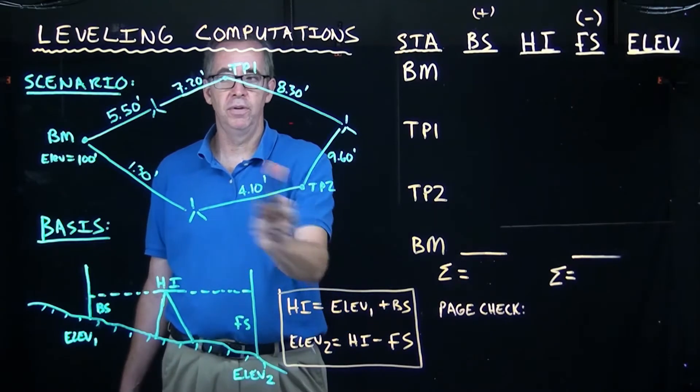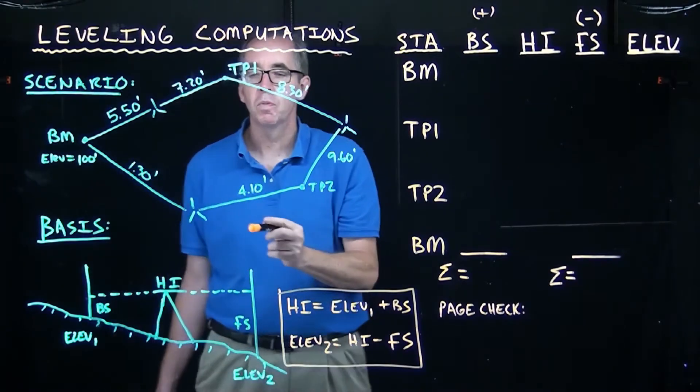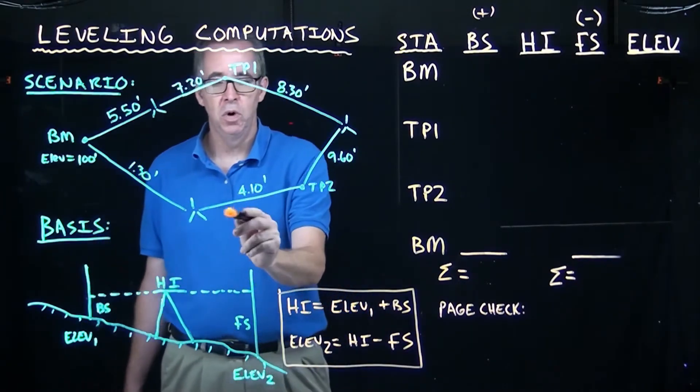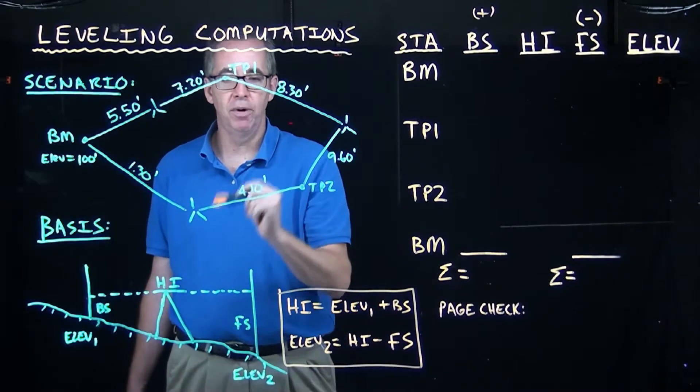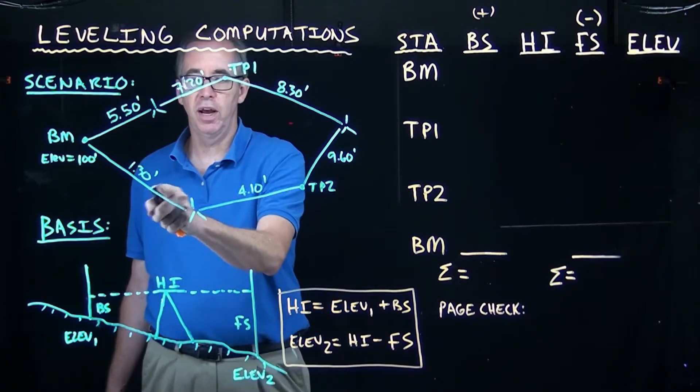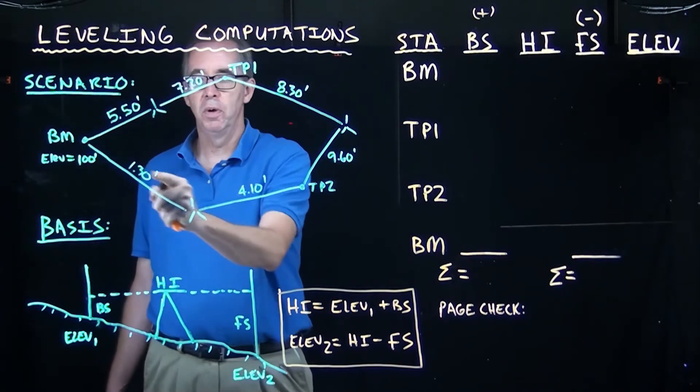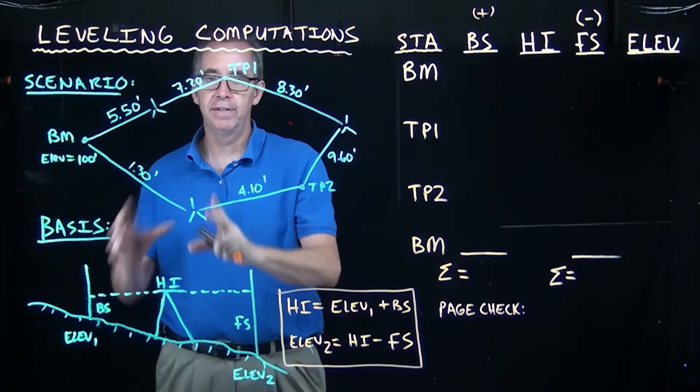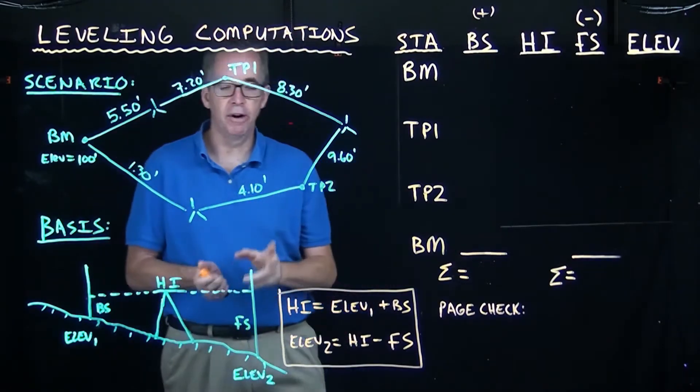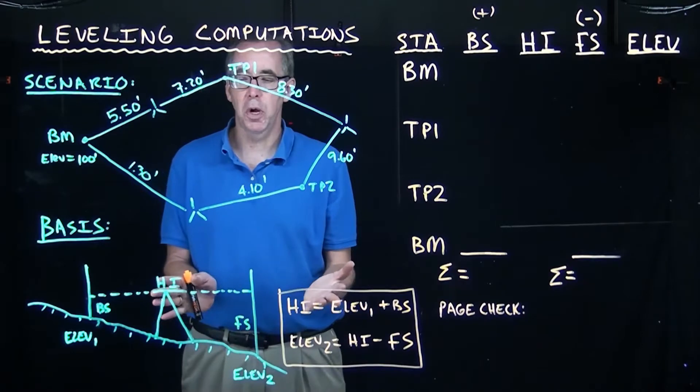The tripod moves with the level, somewhere between turning point two and the benchmark. We set up, once it's level, we do a backside, get 4.1, and we do a foresight to close this loop with the 1.3. That's the scenario that we're looking at. It's a very common scenario for a leveling exercise.